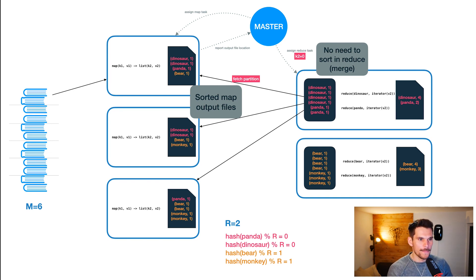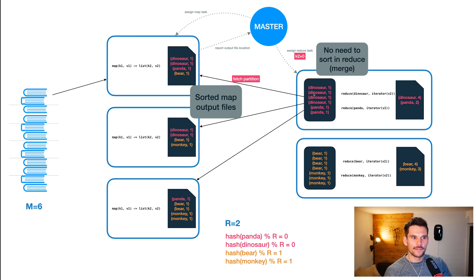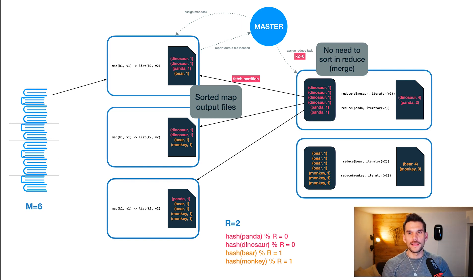So we end up with an output file where the dinosaurs are sequentially in the file, then there is another key panda, then a region for beer, and so on. This leads to the fact that the next stage in Spark — the reducers — don't have to sort these files before processing. Instead they fetch the respective regions, for example all the red records from the map output files. Rather than sorting all records, they need to merge the sorted regions — merging the block with two dinosaurs with another block having two dinosaurs — so the records end up sequentially as input for the reduce function or for the next map stage.